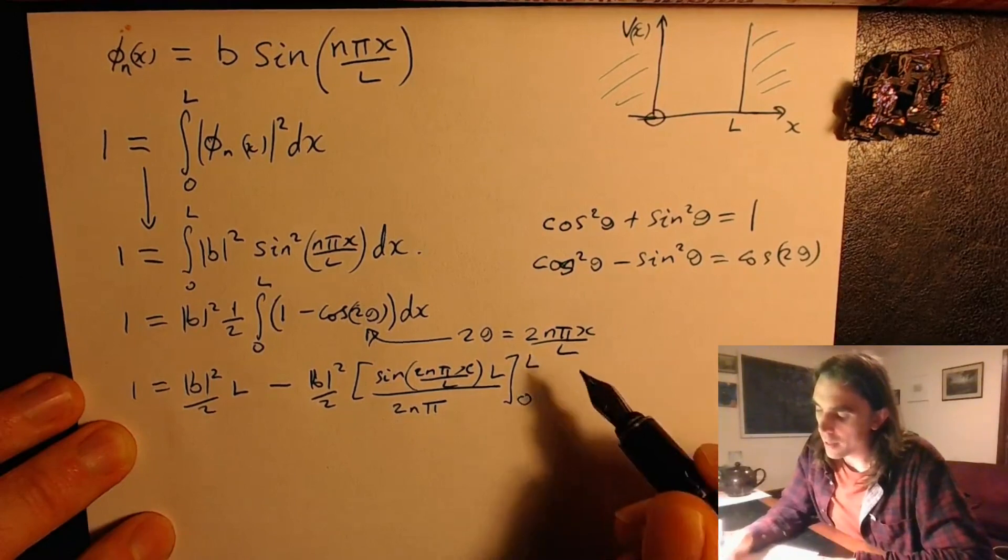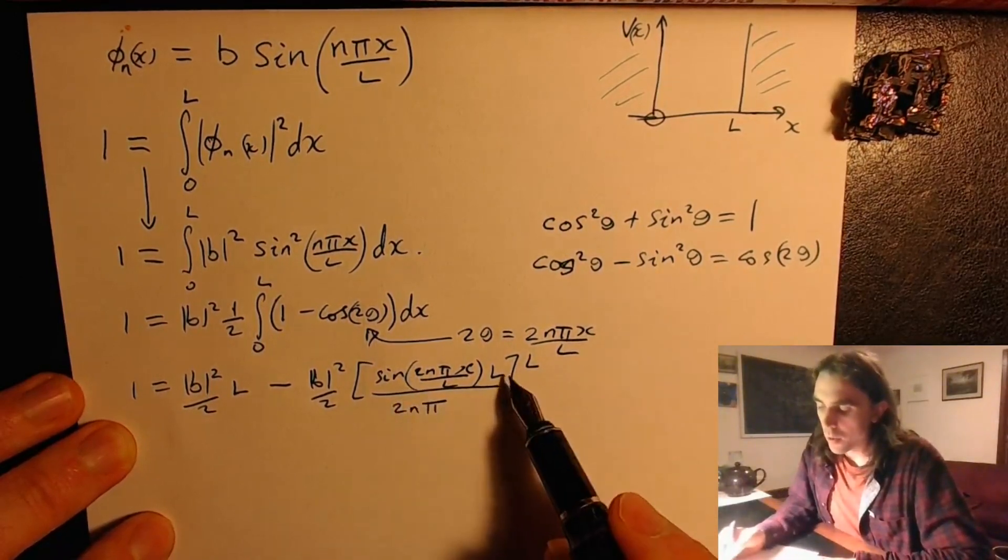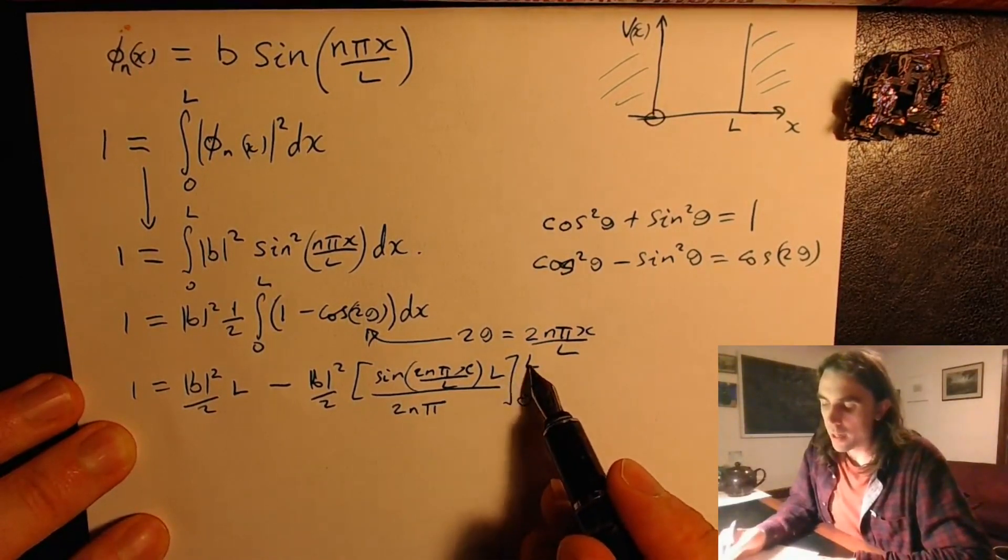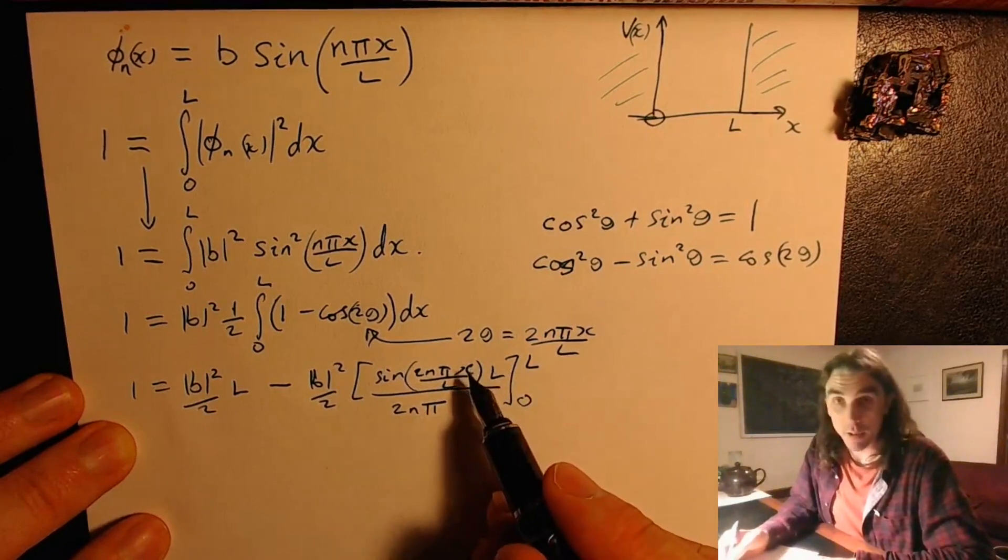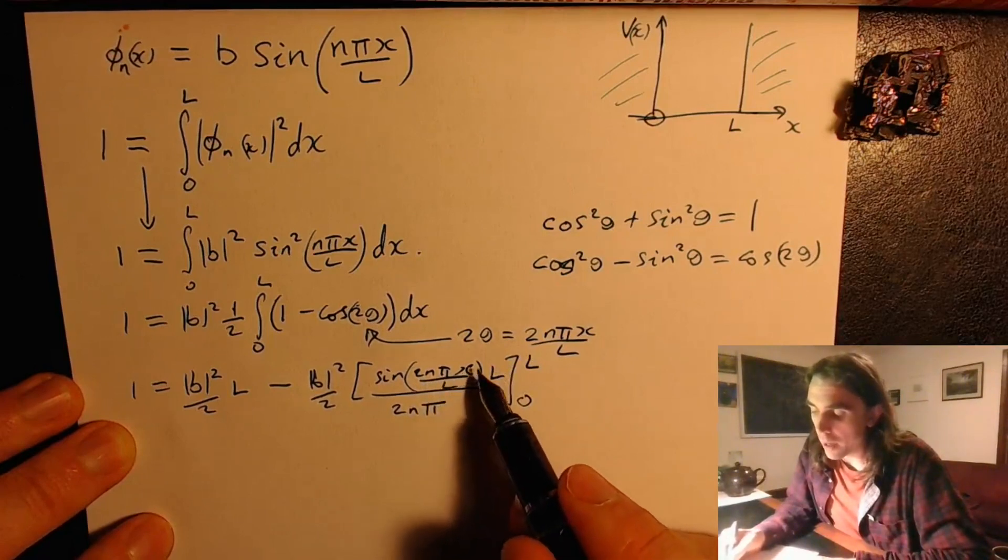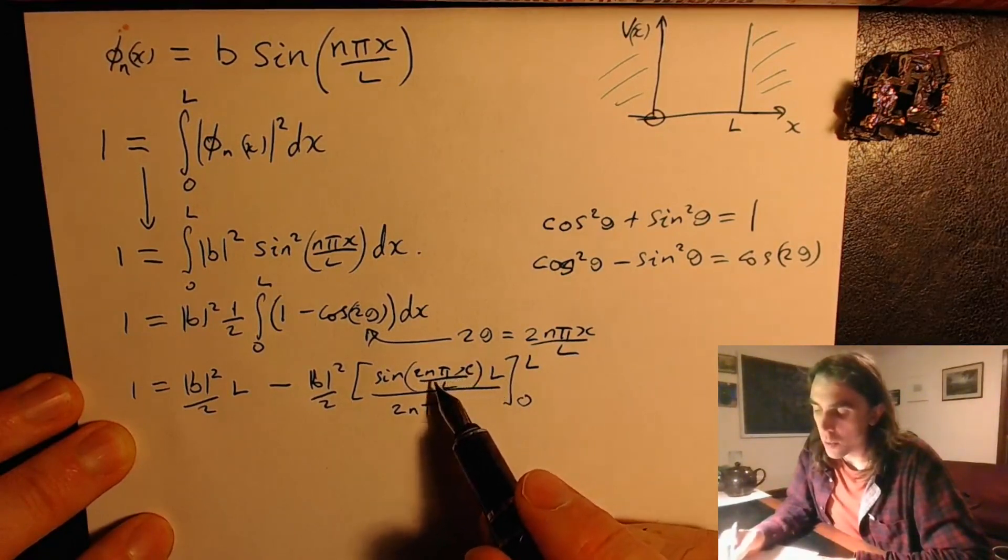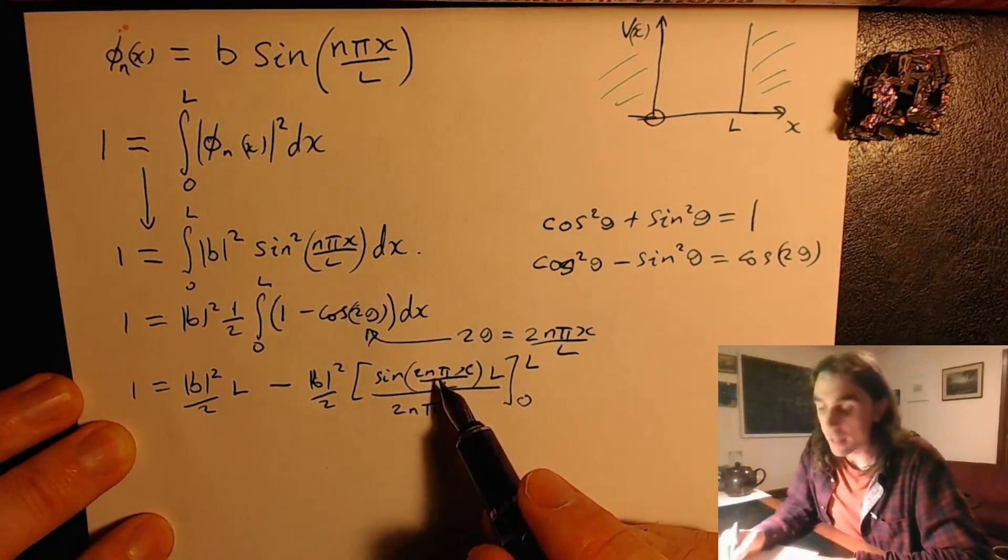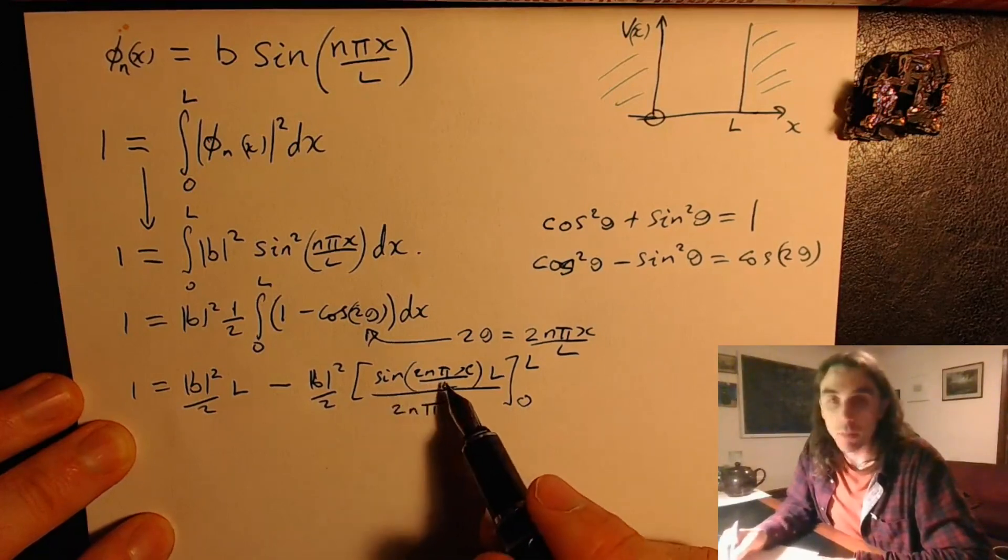And stick in the limit 0 to l, but we see that when we put the limit 0 in there, that's 0, because sin of 0 is 0. When we put the l in, we get 2n pi, and the l's cancel, but 2n pi for integer n, sin of 2n pi is always 0.